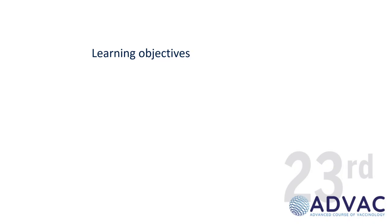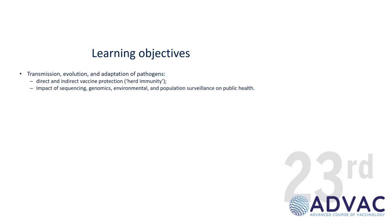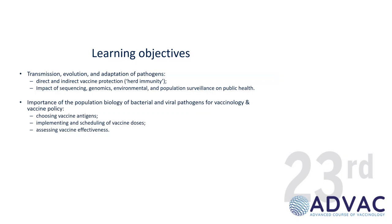The organisers gave me some learning objectives. So I've got 20 minutes to tell you about transmission, evolution and adaptation of pathogens, direct and indirect vaccine protection, herd immunity, impact of sequencing genes, population surveillance in public health — very important — the importance of population biology and public health for viral and bacterial pathogens, choosing vaccine antigens, implementing and scheduling vaccine doses, and assessing vaccine efficacy.